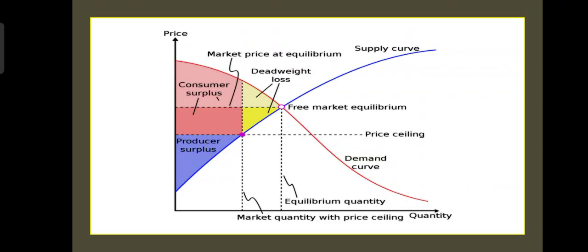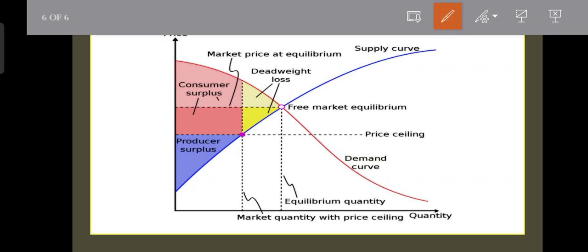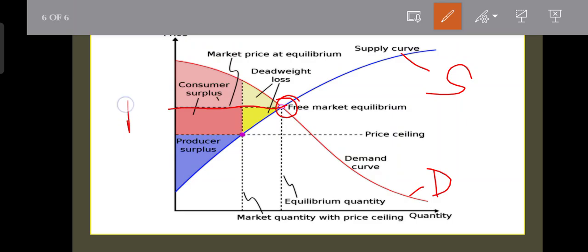Now we have this diagram of deadweight loss. The demand curve is in red lines and the supply curve is in blue lines. There is a price ceiling shown. Here is a consumer surplus and producer surplus area. We call the remaining area deadweight loss.